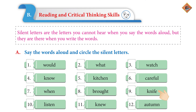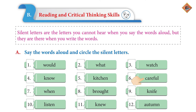Now for the following words, you have to identify and circle the silent letters. Would — L is silent. What — H is silent. Watch — T is silent. No — K is silent. Kitchen — T is silent. Careful — E is silent.